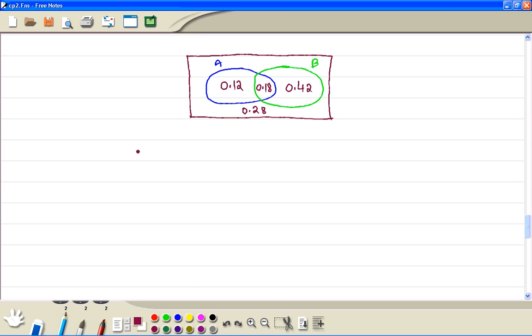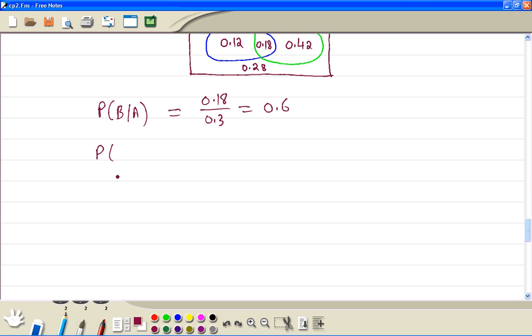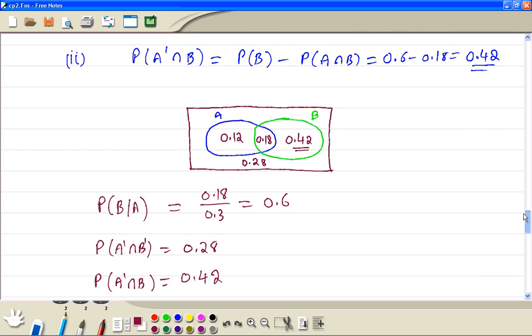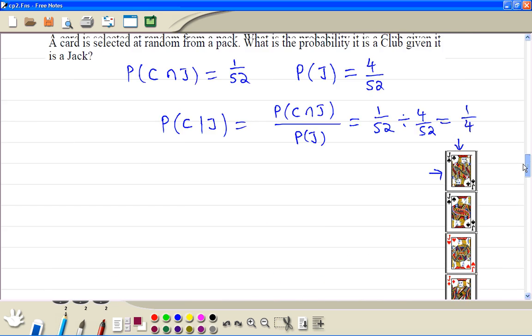Part 1 was B given A. So this was 0.18, the whole A is what's given, so that's what we got 0.6. The other one was not A intersection not B - you just know from the diagram, 0.28. The third one was not A intersection with B, and this is what we already worked out, 0.42. Thank you.